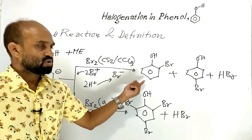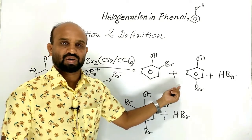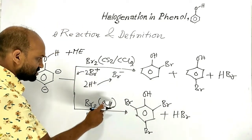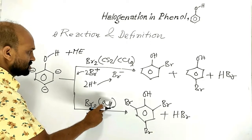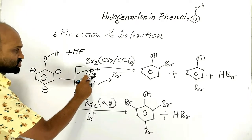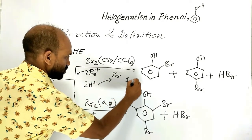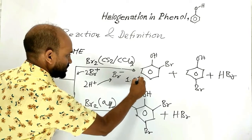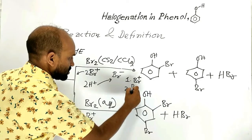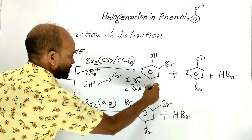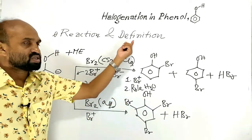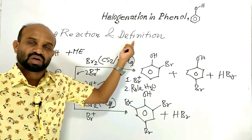We need to know how the bromine cation is formed — that is, number one: formation of bromine cation, and number two: the role of water. Now let's see what is the definition of halogenation.